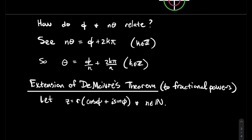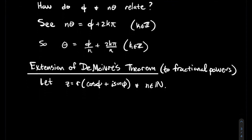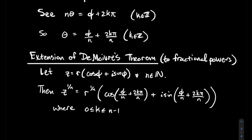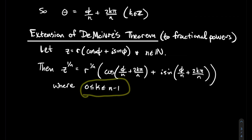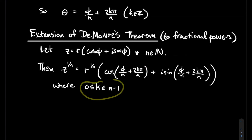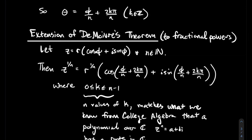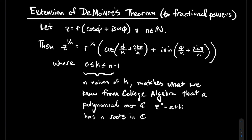The extension of De Moivre's theorem addresses what we do when we want to take a fractional power of a complex number. If z has polar form r cosine of phi plus i sine of phi, and n is a natural number, then to take the 1 over n power of z — the nth root — I just need to take the nth root of the modulus of z. Then the argument becomes phi over n plus 2k pi over n, where k should be a number between 0 and n minus 1. When k equals n, I just wrap back around. So these are the k values that give you distinct complex numbers — there should be n nth roots of a complex number.